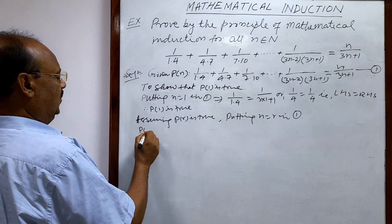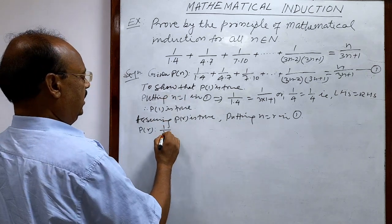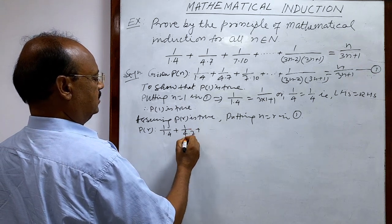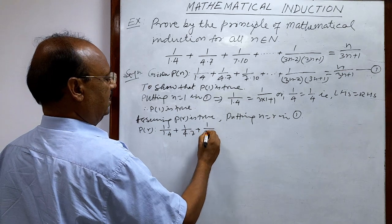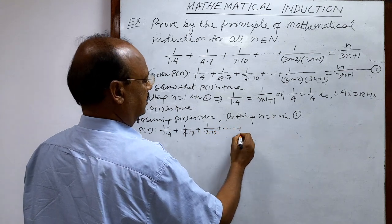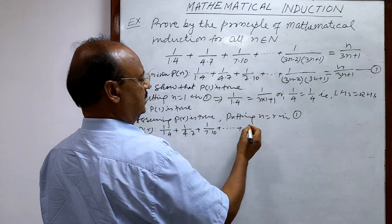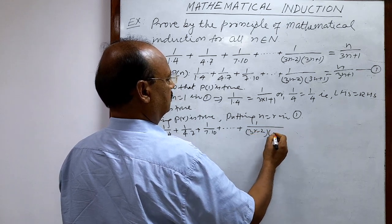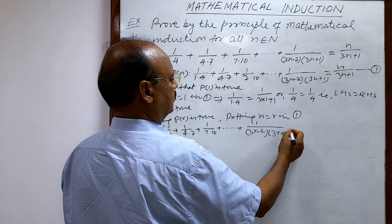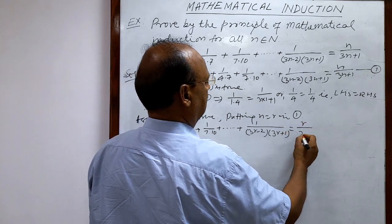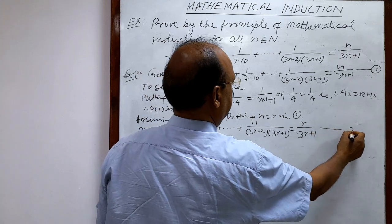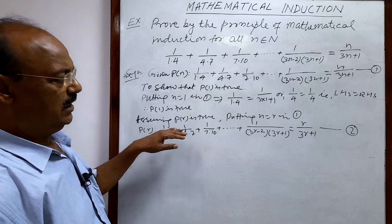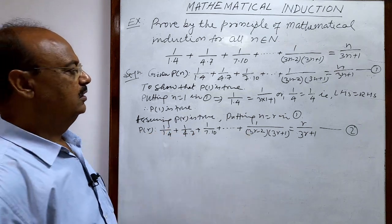Moving to step 2, we assume P(r) is true. The statement P(r) is: 1/(1×4) + 1/(4×7) + 1/(7×10) + ... + 1/((3r−2)(3r+1)) = r/(3r+1). Let us call this relation number 2. We are assuming that this statement is true.